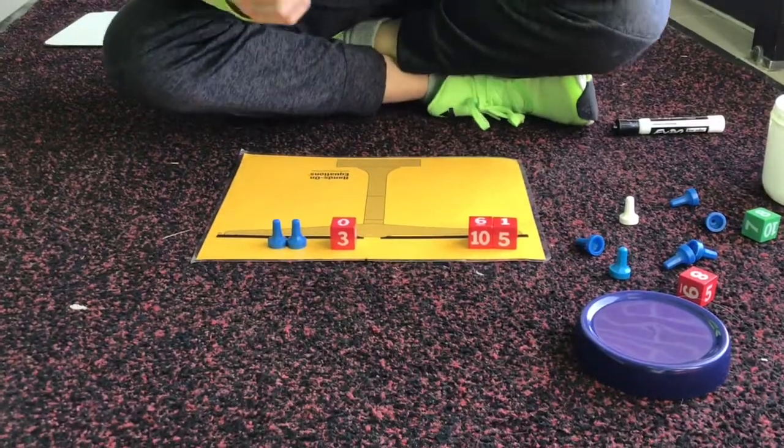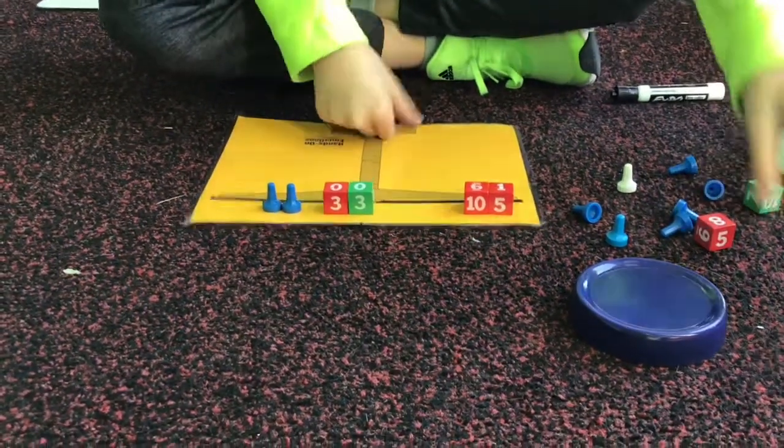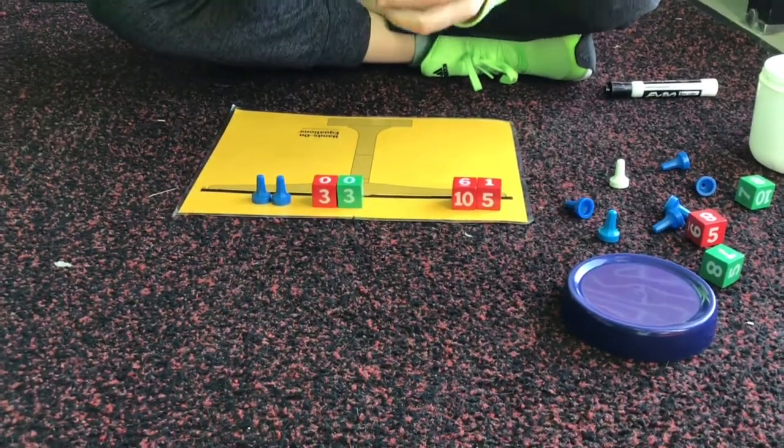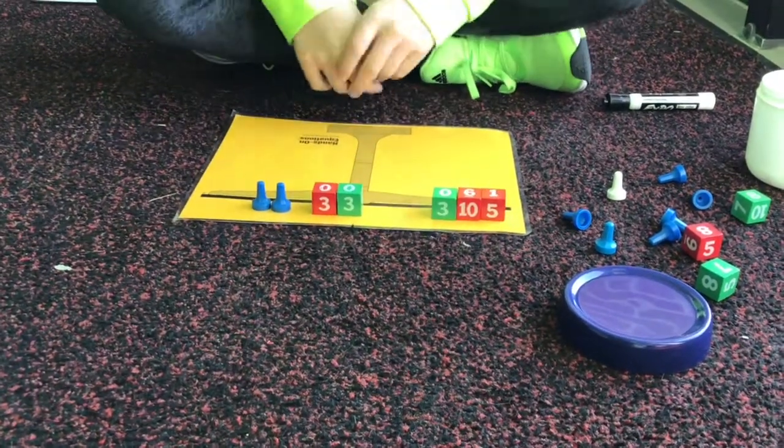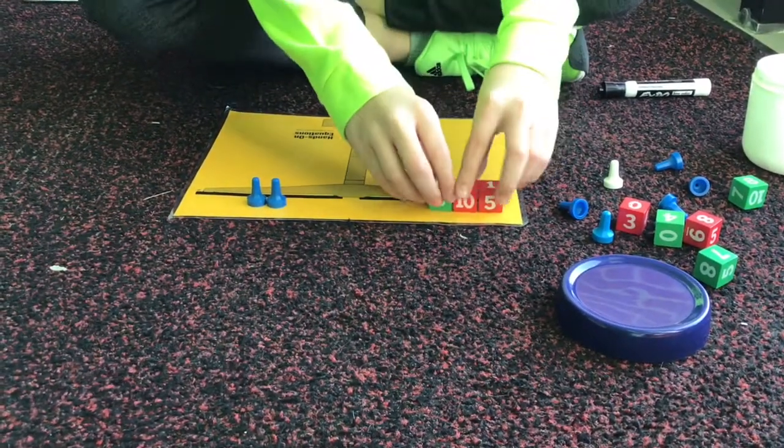Now, I'm going to add a negative 3 here, so that will cancel out, and to make it even, I'm going to add another negative 3 to the other side. So now that I've done that, I can get rid of those, and I can bring this down to 12.